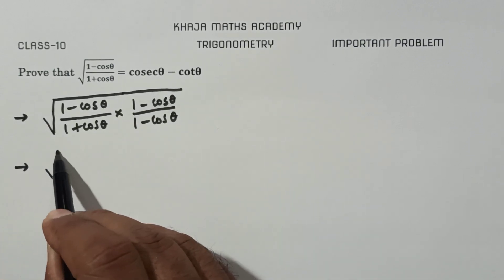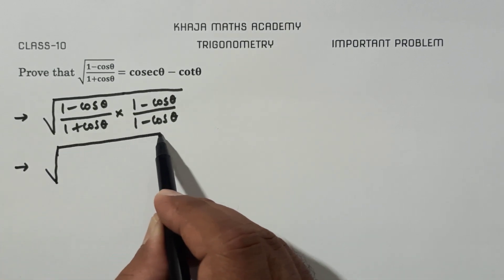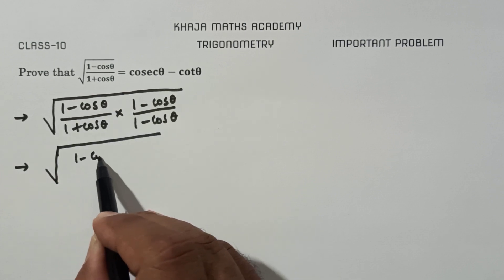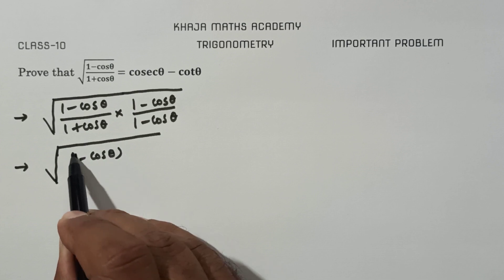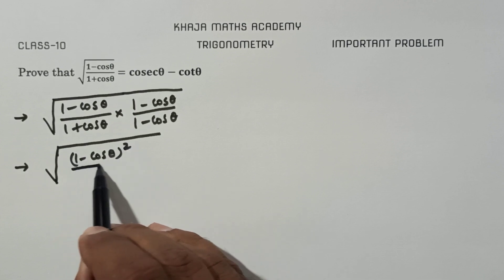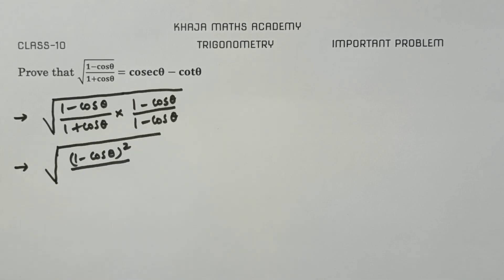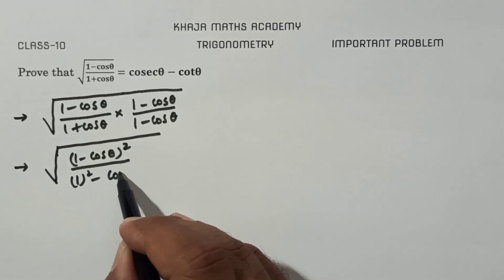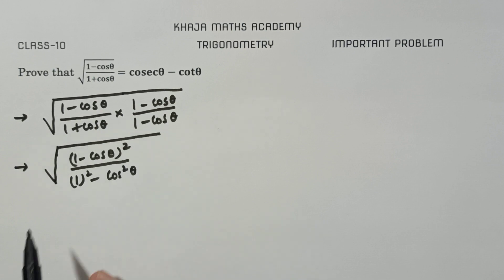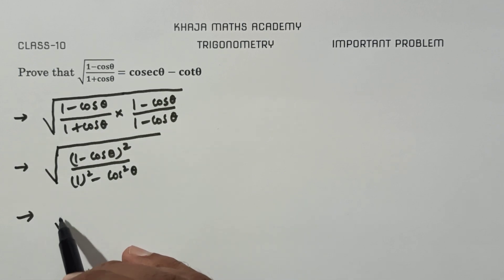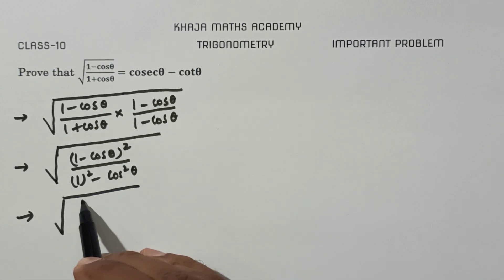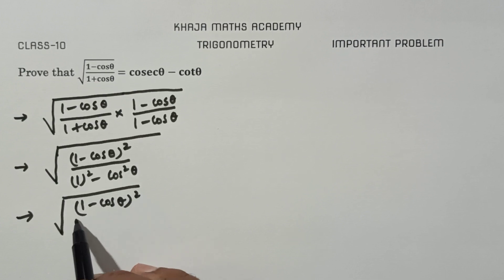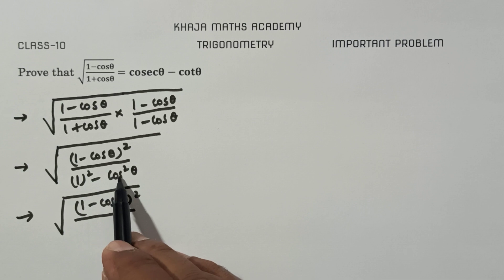In the numerator both are the same, so you can write (1 - cosθ)² . The denominator is in the form (a + b)(a - b), which equals a² - b². So under the root we get (1 - cosθ)² / (1 - cos²θ).